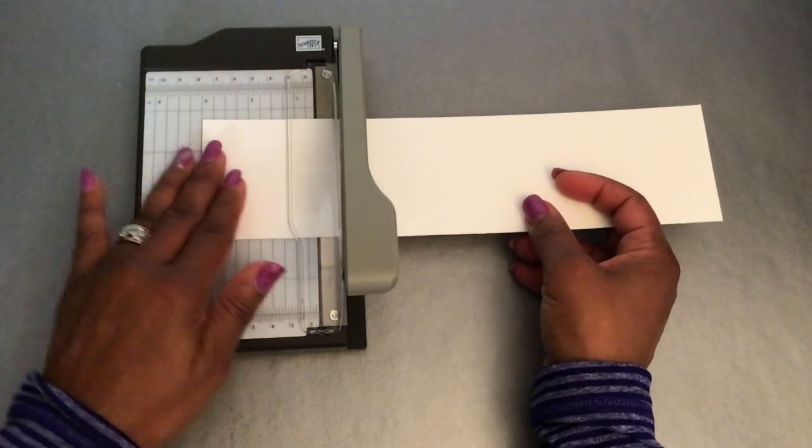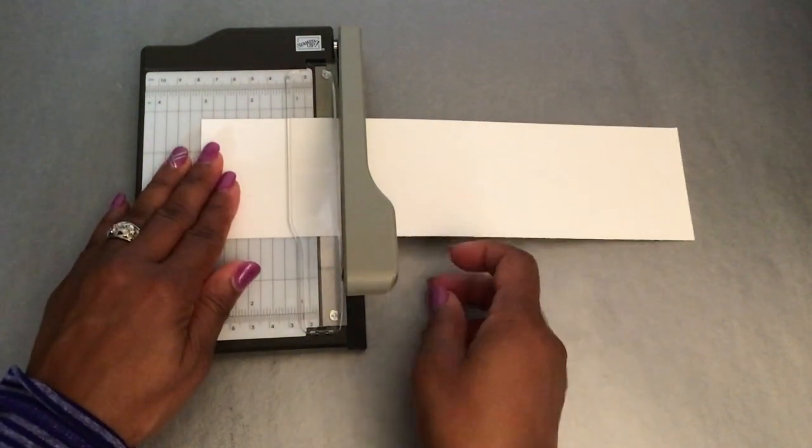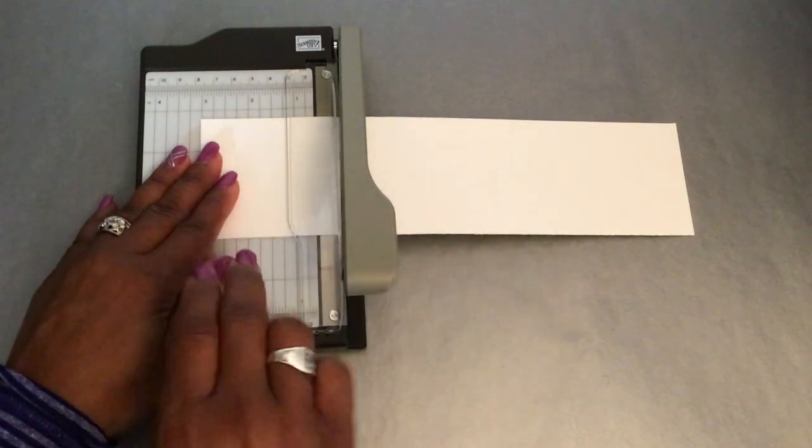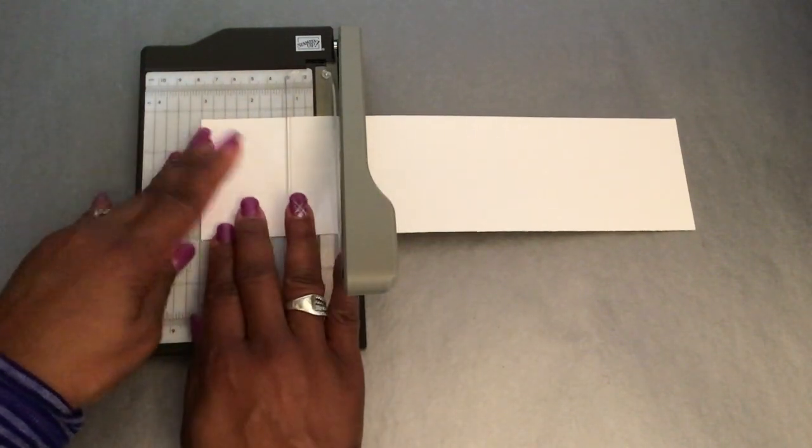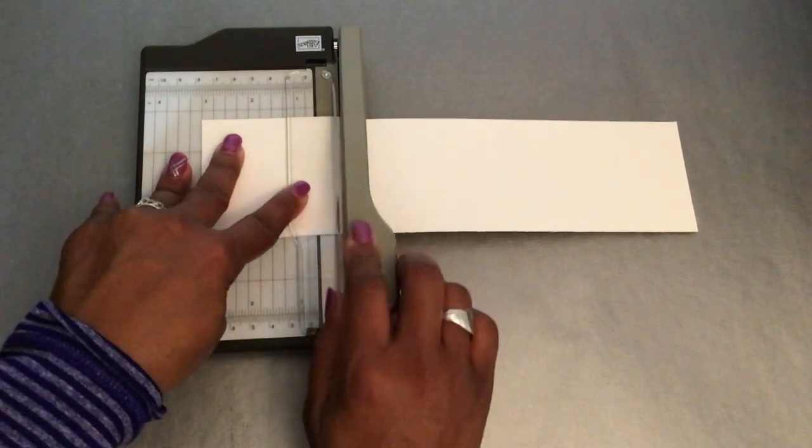So we're going to take 3 inches off of the 11 inches to get our 8 inches. Line that up to your 3 inch mark, hold your bar down, and cut.